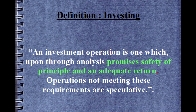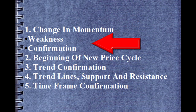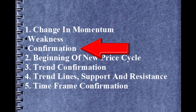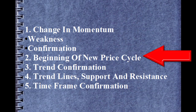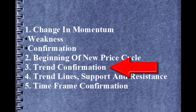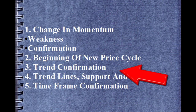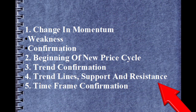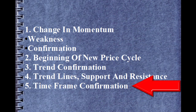The 5 points are: First, change in momentum along with weakness and confirmation. Second, beginning of a new price cycle. Third, trend confirmation. Fourth, trend confirmation should happen on trend lines, support, or resistance. And finally, timeframe confirmation is also needed.